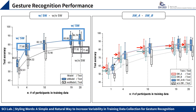We evaluated the performance of the with-styling-words and without-styling-words models. The evaluation was performed using leave-one-out cross-validation, and the number of participants was arranged from 1 to 20. The test result of the with-styling-words model was 9.3% higher based on 20 participants. The accuracy of the without-styling-words model with 20 participants and the with-styling-words model with only 4 participants were similar, meaning styling words can be a great help when reducing the number of participants. The box plot also confirms that the generalization performance of the with-styling-words model is more stable.